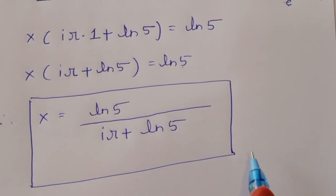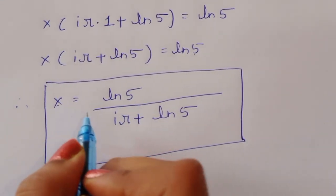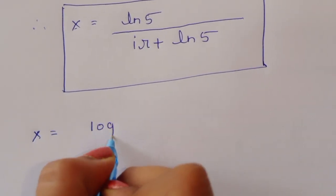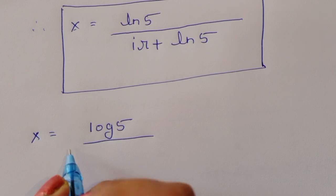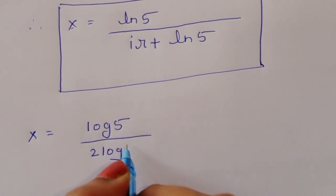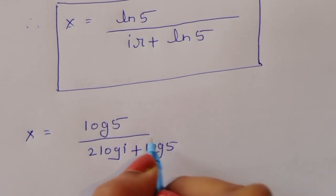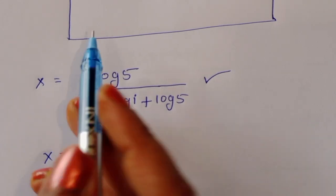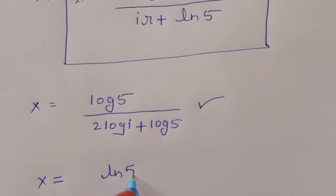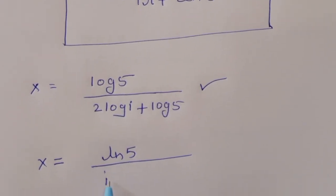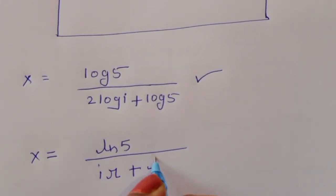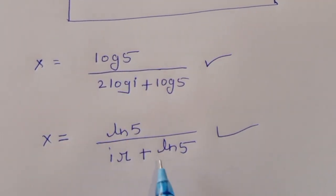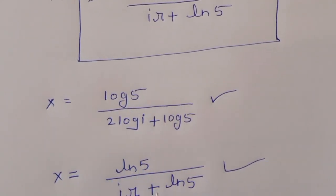So we got the value of x using two methods. In the first method, x is equal to ln 5 divided by (2 ln i + ln 5). In the second method, x is equal to ln 5 divided by (iπ + ln 5). These are the two solutions using the first method and second method. Thank you.